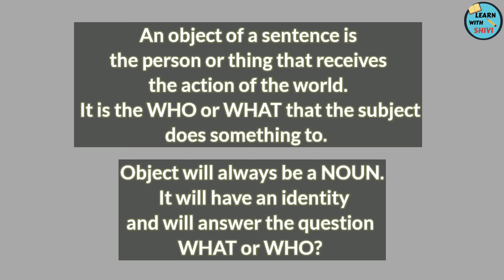Identifying an object in a sentence is very simple. What you have to do first is identify the verb. After identifying the verb, you have to question it with a 'who' or 'what'. And whatever you get as an answer will be your object.